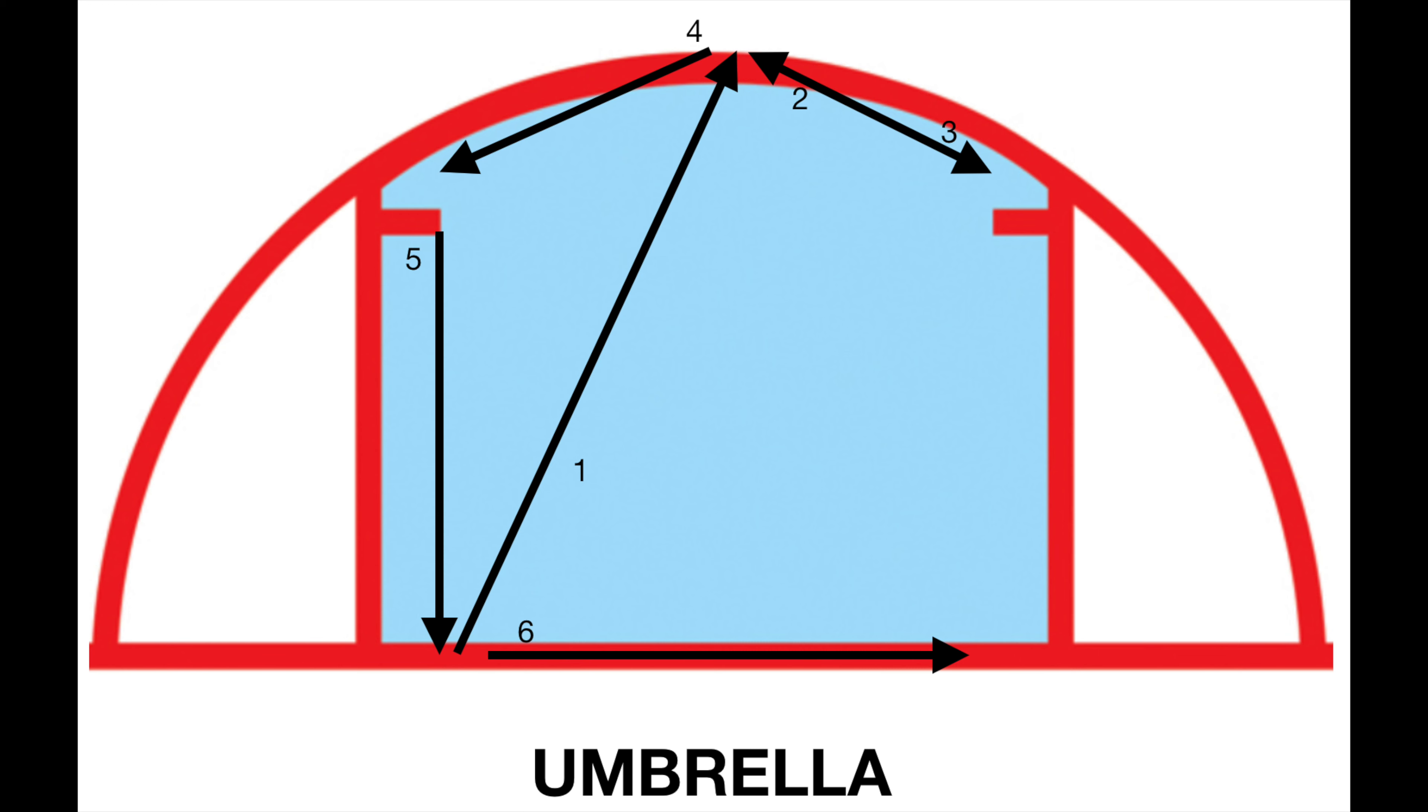Now the goalie will start the drill on the right post. The first move is a reload out to the top of the crease, then shuffle down to the left face off dot, shuffle back to the top of the crease, shuffle over to the right face off dot.